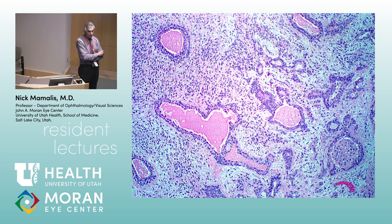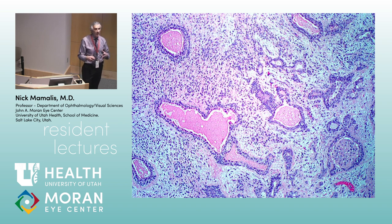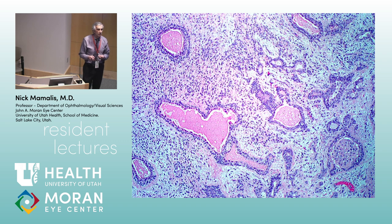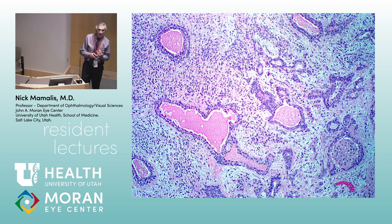Pleomorphic adenoma — the reason they call it that is there's proliferation of both glandular elements, which can even form little tubules, and myoepithelial cells proliferating in between. It's called a benign mixed tumor, or pleomorphic adenoma. In the old days we were taught the 50/50 rule: 50% of all lesions of the lacrimal gland are epithelial lesions, and 50% of those are the benign mixed tumor — the pleomorphic adenoma. But it turns out the first part of that is just not true.